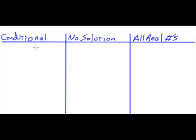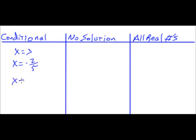We have three types of solutions, and this is what most books use. The first type is a conditional solution — that's exactly what you think. It's a solution like x equals 3, or x equals negative 2 fifths, or x equals 0. Some sort of unique solution. So a conditional solution is a solution whereby it's the only solution for a particular equation.